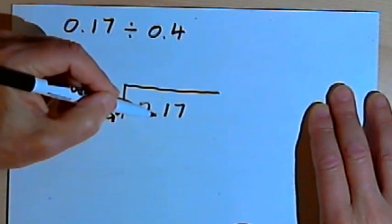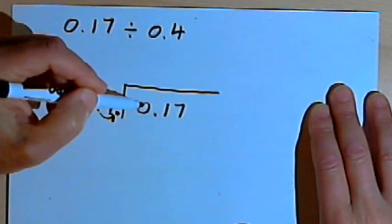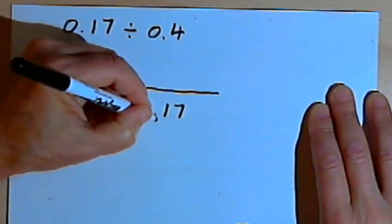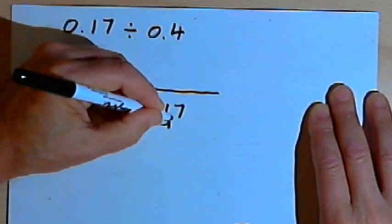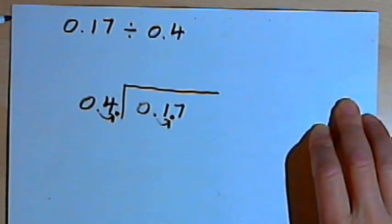I have to do the same thing for the dividend, the number that's being divided. So I move its decimal point one place to the right, and now it's just become 1.7.